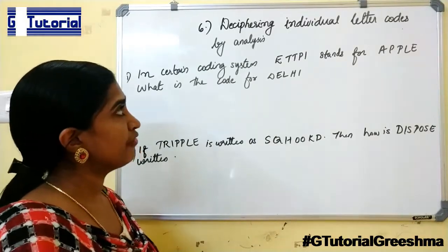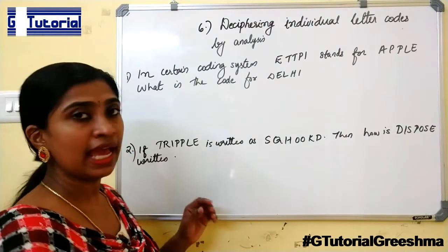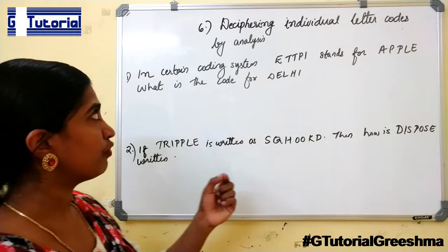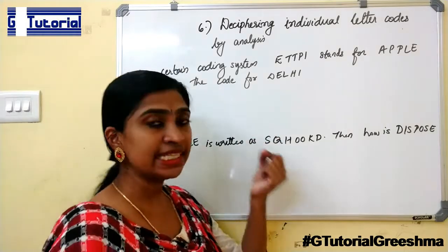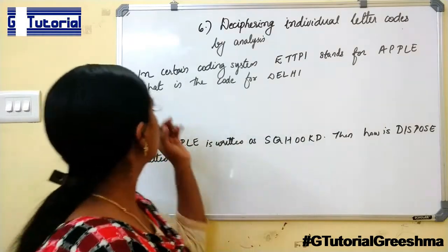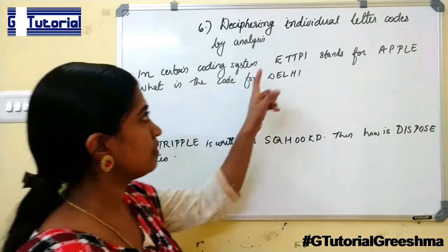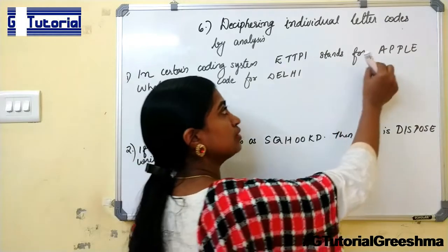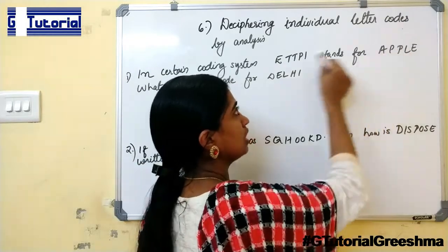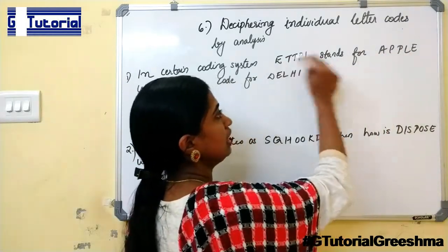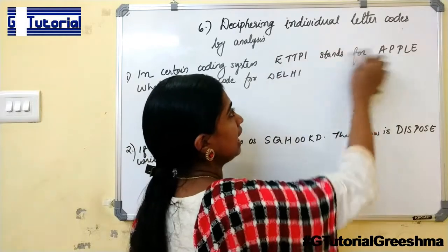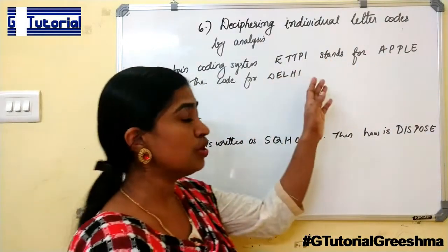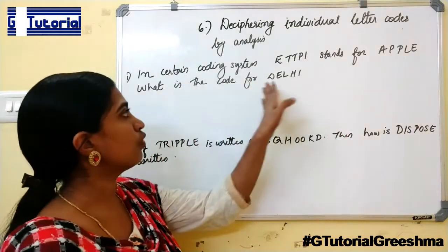Next type is deciphering individual letter codes by analysis. In this type of problem, you have to find the code for each letter of the given word. The question is, in a certain coding system, EJTPI stands for apple. So each letter of the word apple is coded as follows: A is coded as E, P as T, L as P and E as I. You have to find that rule and then solve the code for daily.